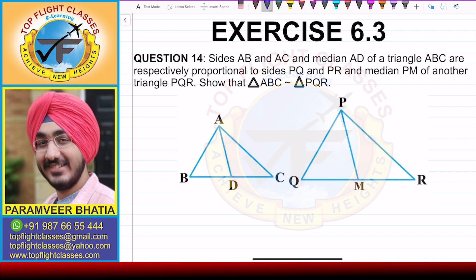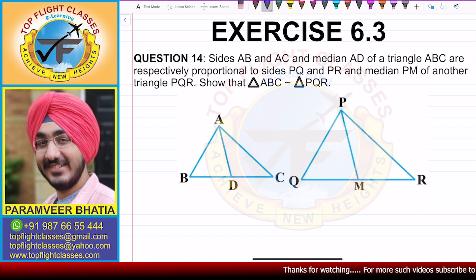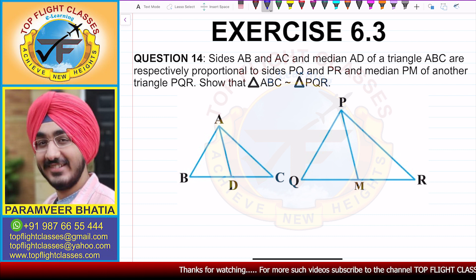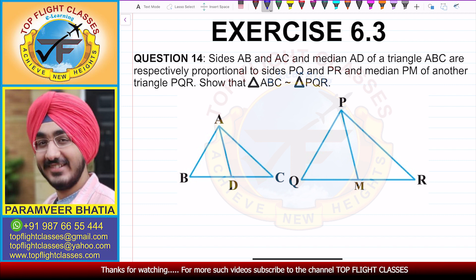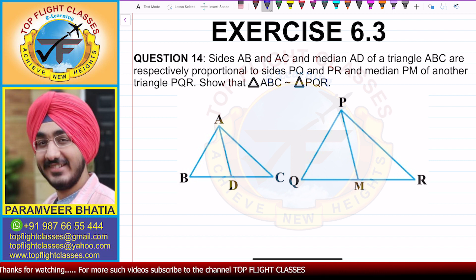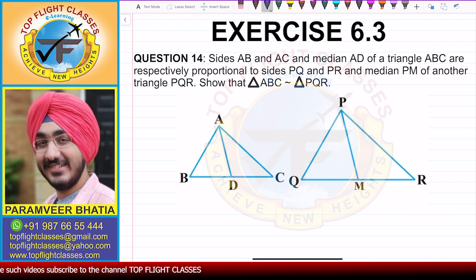In this video, we are going to solve question number 14 of exercise 6.3. The question says: sides AB, AC and the median AD of triangle ABC are respectively proportional to the sides PQ, PR and the median PM of another triangle PQR. Show that triangle ABC is similar to triangle PQR.